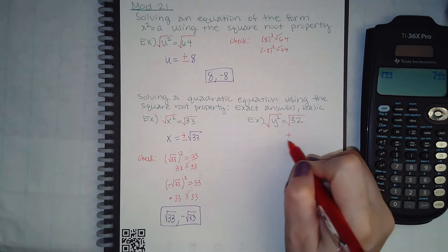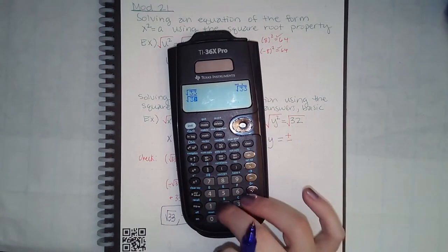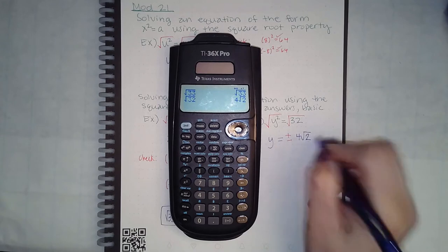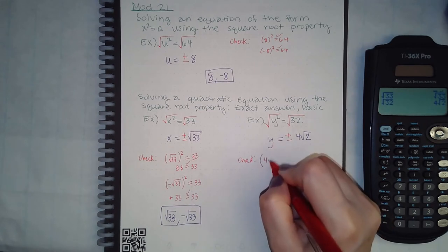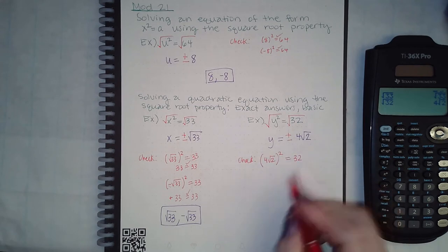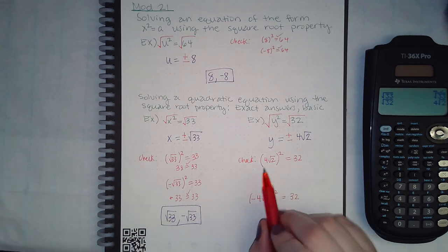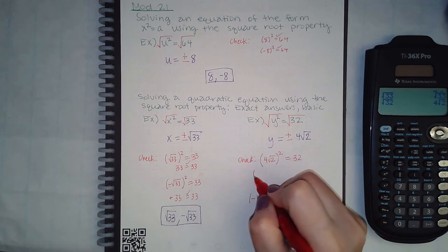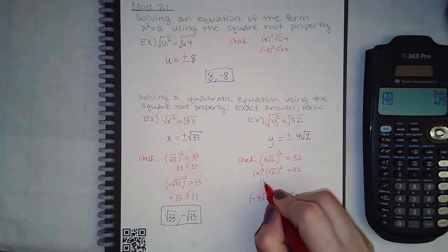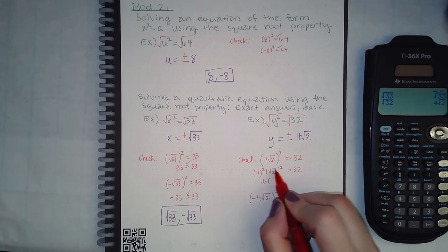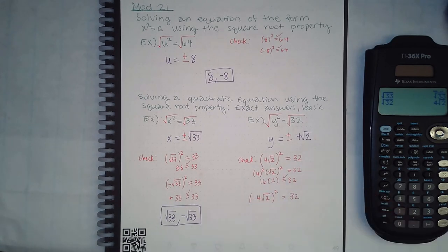Over here it's the same thing — to get rid of the square we take the square root, which automatically means plus or minus. The square root of 32 does simplify: it becomes 4 square root of 2. To check the positive answer, we plug in positive 4 square root of 2. Since this is a product, you can apply the square to both factors: 4 squared is 16 and square root of 2 squared cancels, leaving 16 times 2 equals 32. Yes, that checks out.